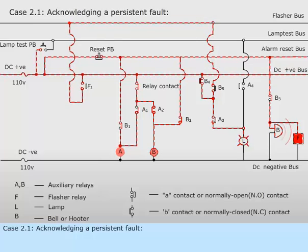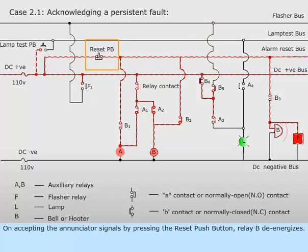Case 2.1. Acknowledging a persistent fault. On accepting the enunciator signals by pressing the reset push button, relay B de-energizes.